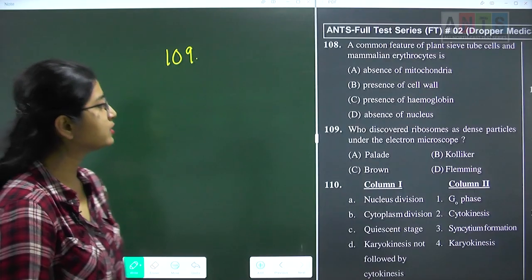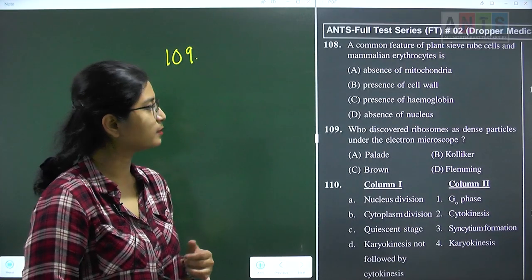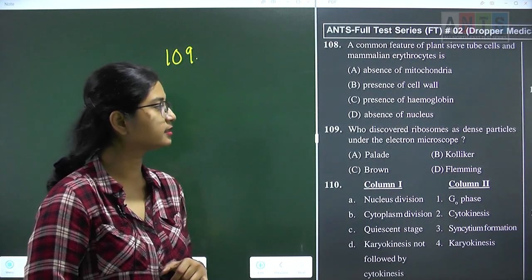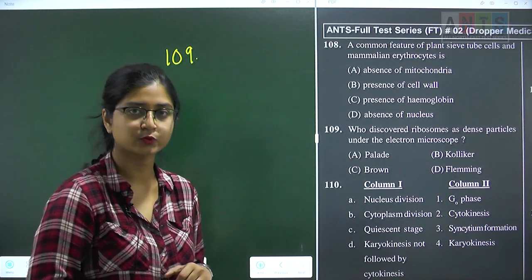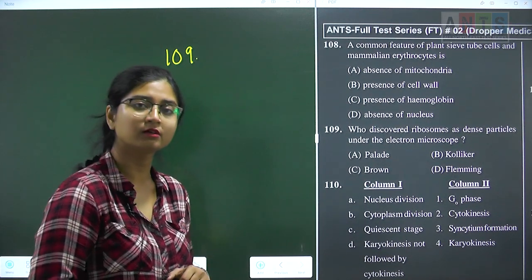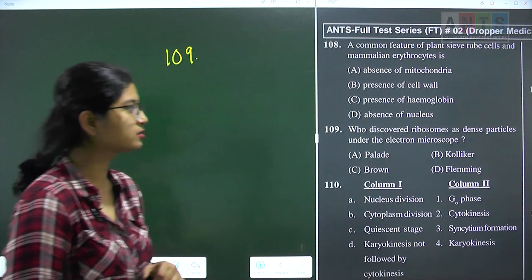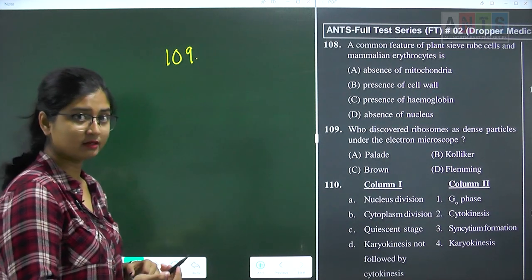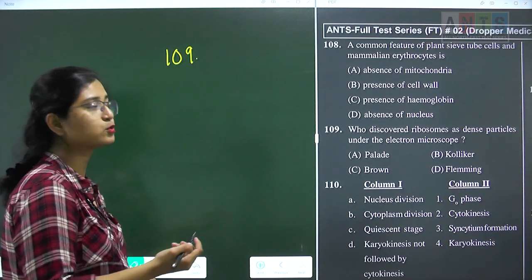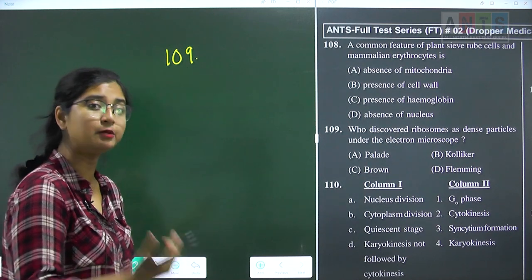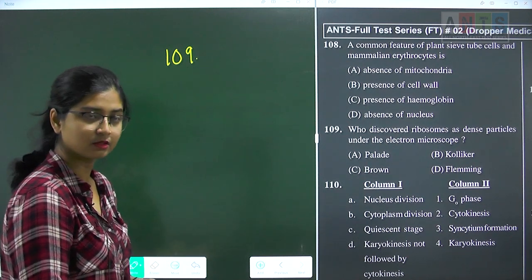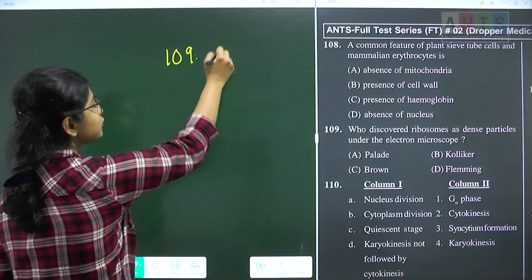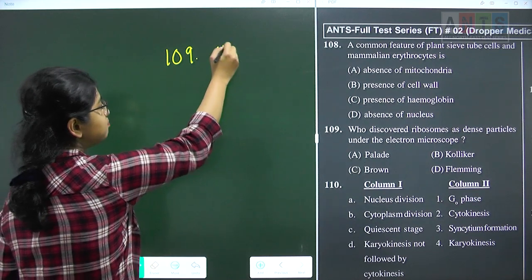Question 109: who discovered ribosomes as dense particles under the electron microscope? The discovery of ribosomes is credited to George Palade, which is why ribosomes were also called Palade particles. Question 109 answer is option A, Palade.